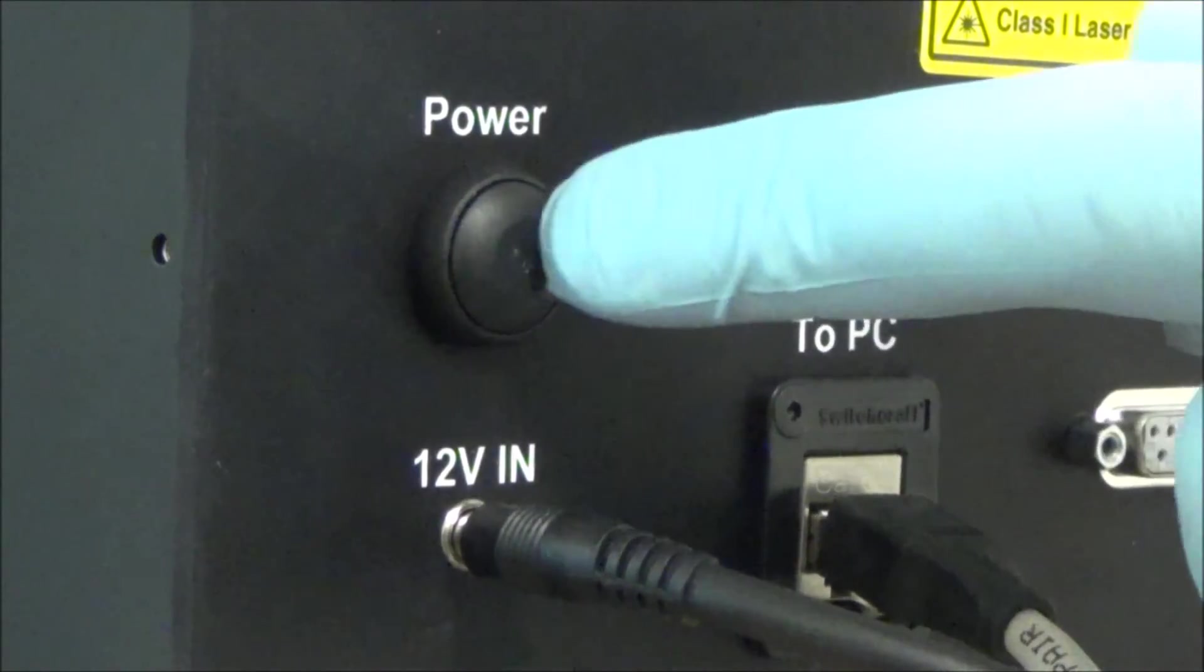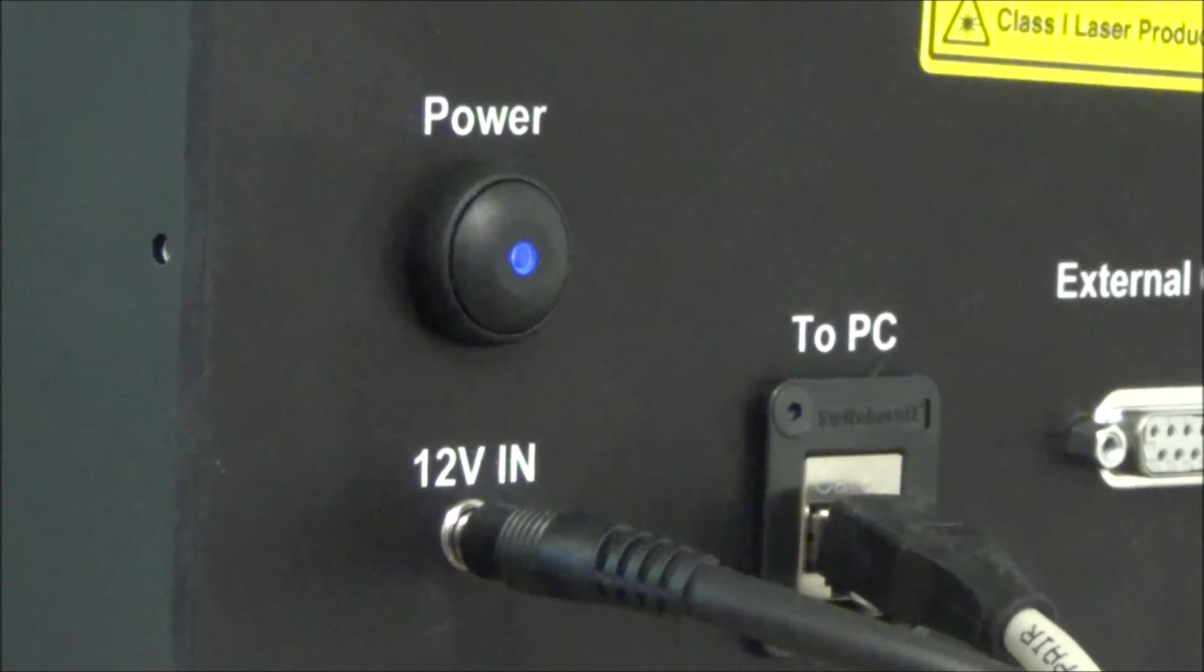The power button is pressed to turn the source electronics on. The power LED is half-illuminated after pressing the power button, indicating initialization of the source controller. In 20 to 40 seconds, the power LED becomes fully illuminated, indicating the source is ready for operation.